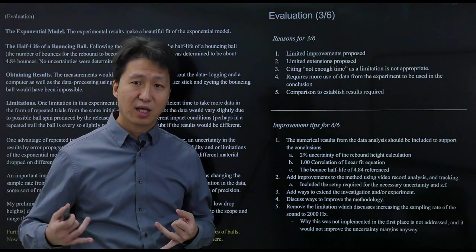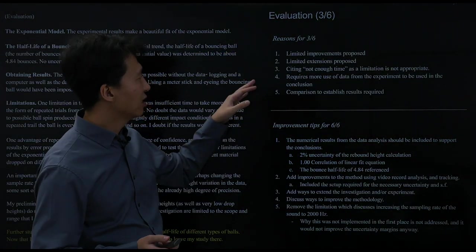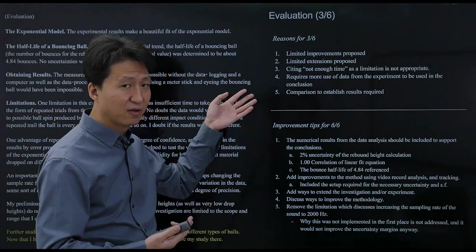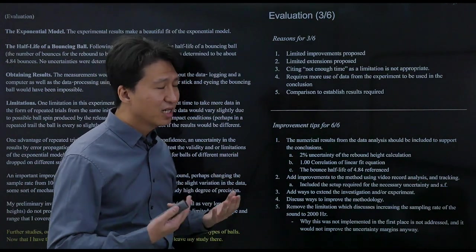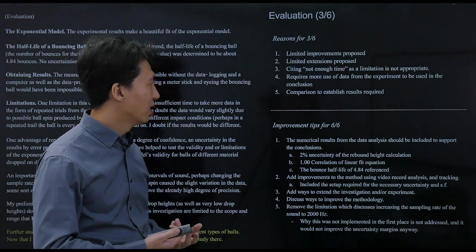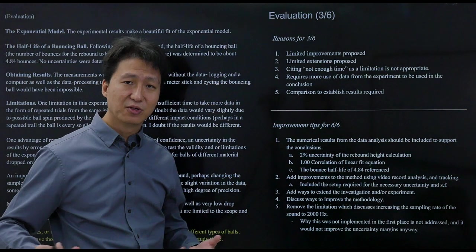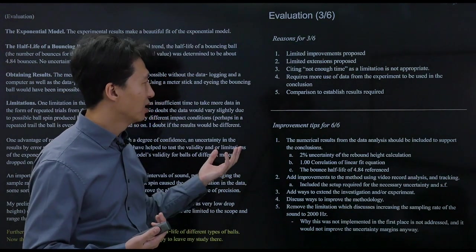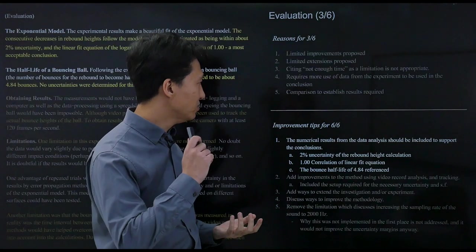Next, after you do the data analysis, you have to do your conclusions, which is graded as the evaluation. This includes your conclusion and limitations and extensions and evaluations of your whole experiment. One thing you have to see is they only got a three out of six. The reason for that is because you have to propose improvements and they did not have a lot of them. You have to propose extensions and they also did not have a lot of them. Citing not enough time is not a limitation that is appropriate for your IA. You should not run out of time. Running out of time just means you did not plan well enough. There's not enough data used in the conclusion. You had a lot of data analysis, you crunched the numbers, you have the results. Why not use the results in your conclusion? And finally, there's not enough comparisons. You have to compare your data and results to other established scientific results.